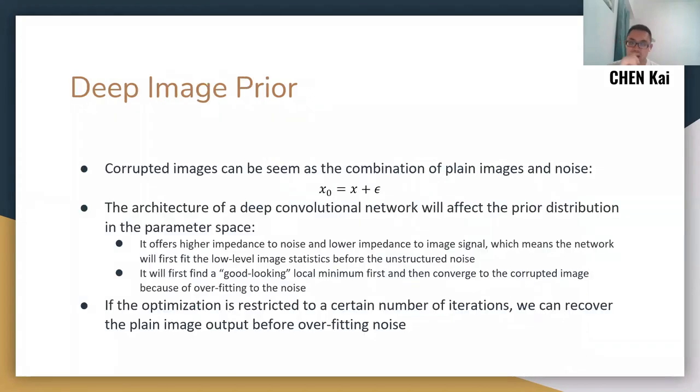So is there anything we can do so that based on the architecture of the convolutional network, we can somehow recover the plain image from the corrupted image as input? In this paper, the authors are actually observing this kind of phenomenon called Deep Image Prior. So first, let's think that a corrupted image can actually be seen as the combination of plain image X and random noise. And we think that the architecture of the deep convolutional network will affect the gradient distribution in the parameter space of the neural network.